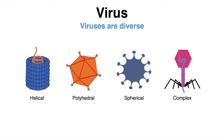There is no such thing as a general structure, but there are distinct features that are shared between some groups of viruses. Some components are found in every virus, while some others are exclusive to certain subtypes.